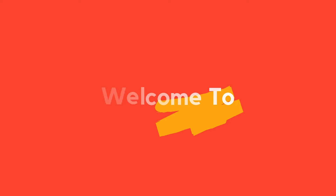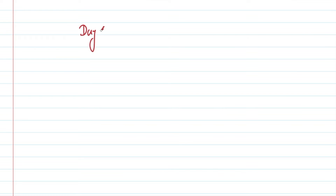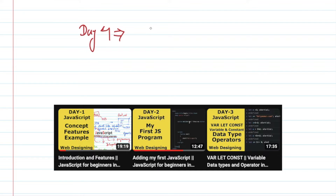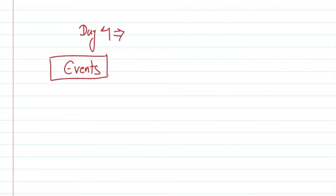Welcome back to another video of Willards Nepal. In this video, we are going to continue on this JavaScript series. Today we are going to talk about Day 4 of JavaScript. In the last video, we talked about basic JavaScript — variables, constants, and data types — and programming in the console.